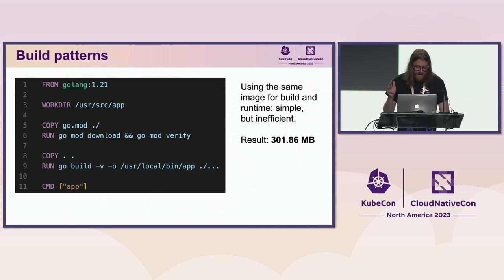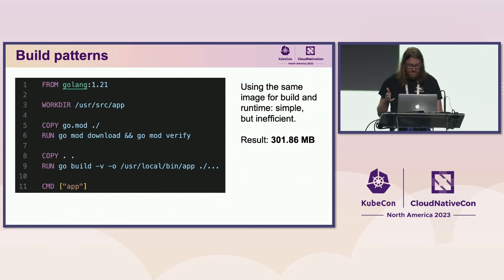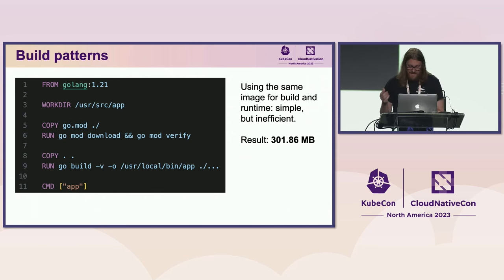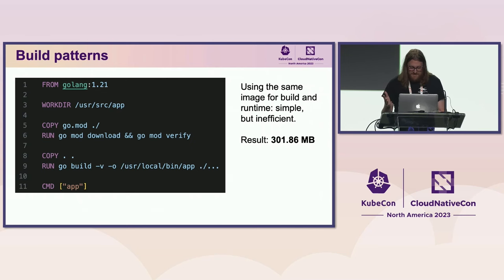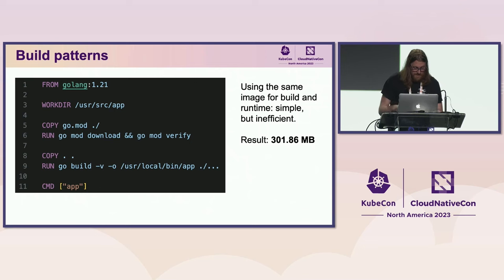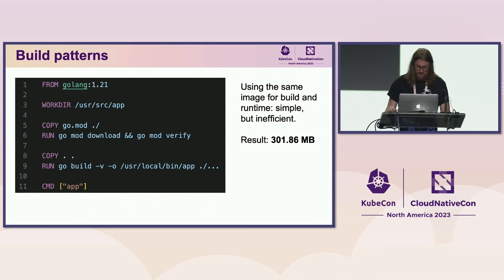Here's the Dockerfile that gave us our Debian-based image. We're building and running from the same base image, and since we're trying to do two jobs with one tool, we need a bunch of build-time dependencies that we don't need at runtime. We've also got a shell, curl, apt, and so on.